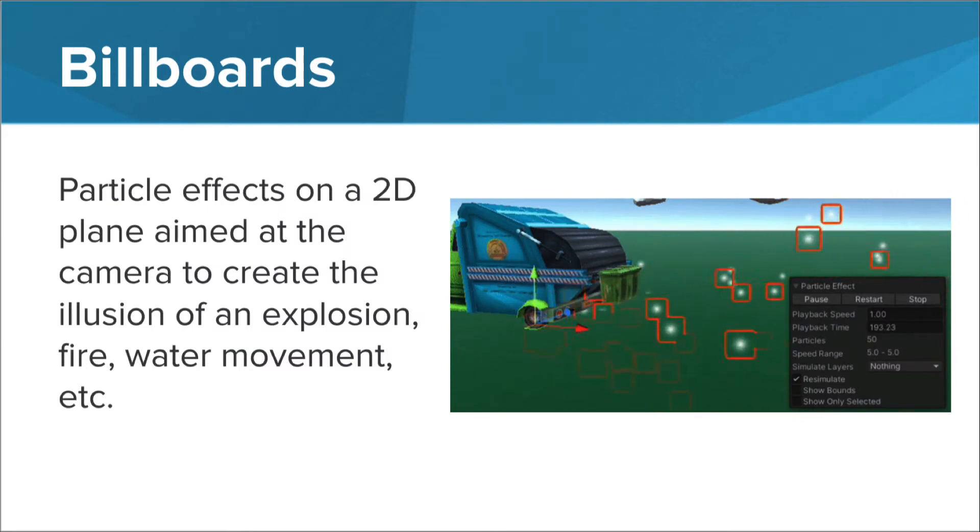Most often, particle effects are built up in layers using billboards. These are 2D shapes that project colors, textures, and materials toward the camera. When you see an explosion or fire in a game, it's likely a set of textured layers within multiple particle systems creating a 2D effect towards the camera.